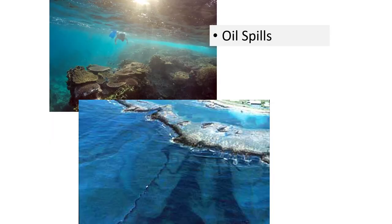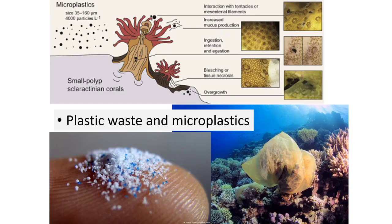Microplastics can be very, very small, but they can interact with coral because they increase mucus production — like particulate matter for the coral. This causes problems like bleaching and overgrowth. Microplastics are becoming more and more common as a problem because the plastic waste we produce eventually breaks down into these tiny microplastics. We'll talk more about those with bioaccumulation.